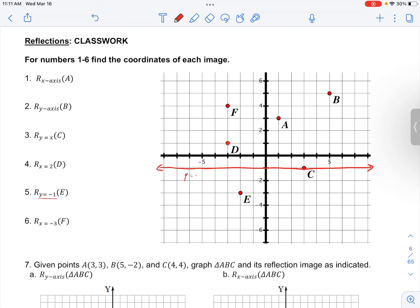So here we have drawn the line Y equals negative 1, and E is found two spaces below this line.